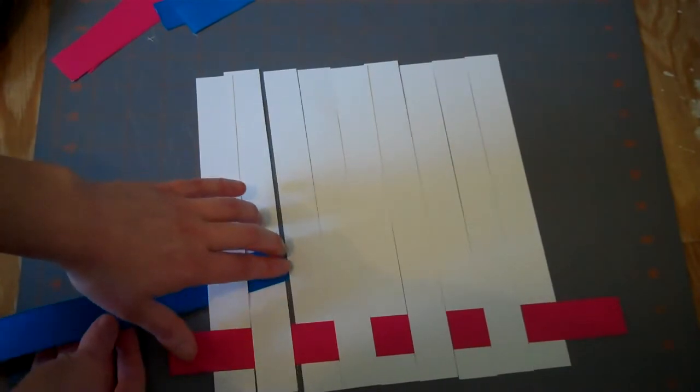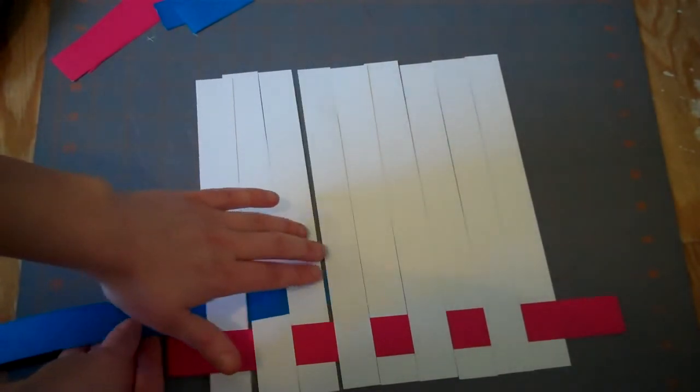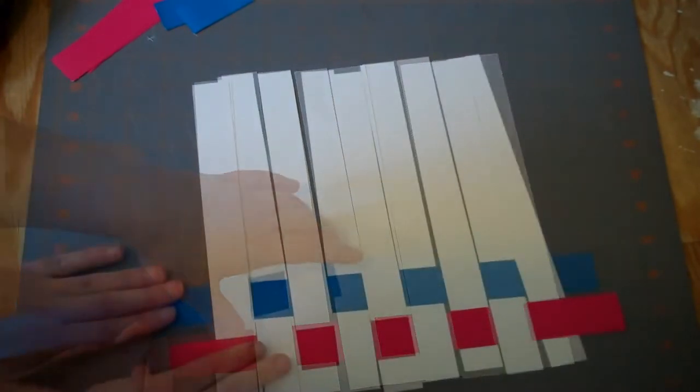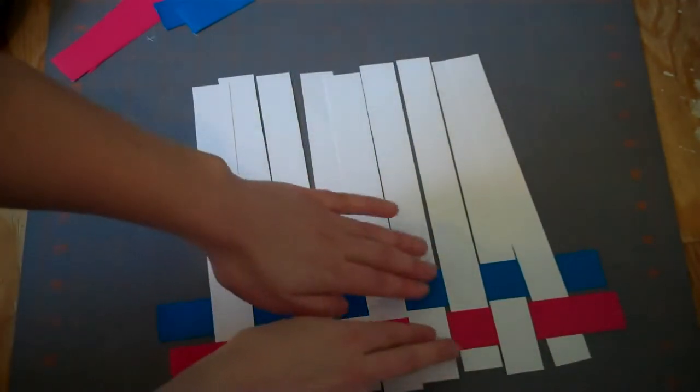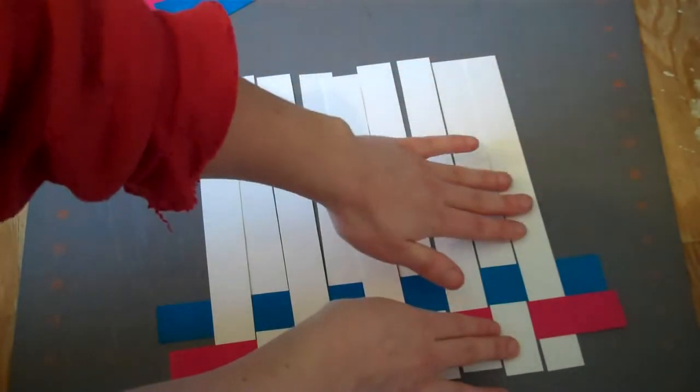Just do the same thing as the red going all the way across once again. Then make sure to push it down tight next to the red and readjust your white strips again.